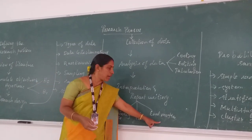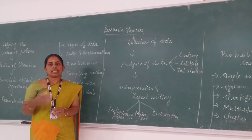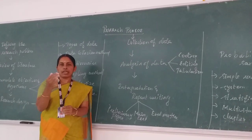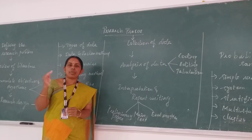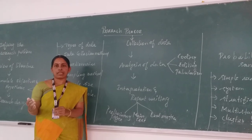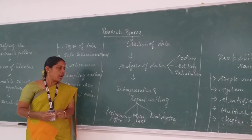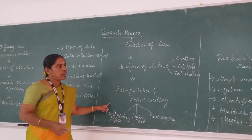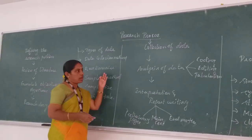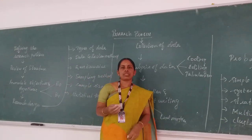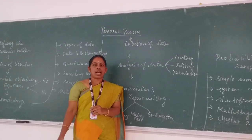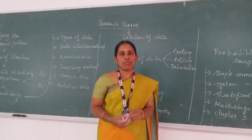The last part is the end matter, which has two parts: annexure and bibliography. In annexure, we include the questionnaire and summary tables. In bibliography, we include all references — book references, website references, and journal references. The researcher follows all these steps and produces a good research thesis or research publication. Thank you for watching.